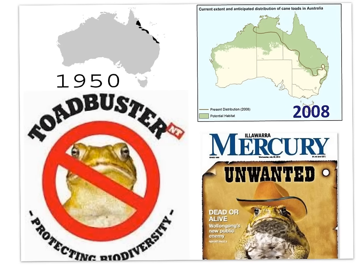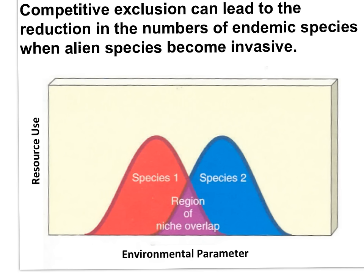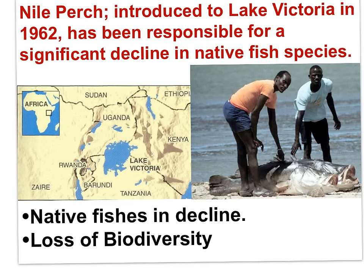When the niches of two species overlap, competitive exclusion comes into play. Competitive exclusion can lead to the reduction in the numbers of endemic species when alien species become invasive. Nile perch was intentionally introduced to Lake Victoria in 1962 for commercial fishing purposes due to its significant size, with masses up to 200 kilograms. Once introduced, it reproduced enormously and spread throughout several aquatic environments in Africa. The Nile perch has been responsible for a significant decline in native fish species, particularly various species of cichlids, and is considered one of the world's worst 100 invasive species by the IUCN.